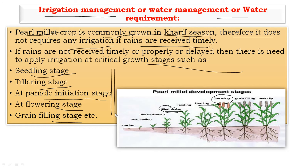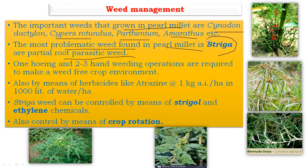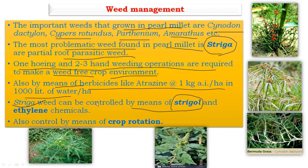Next, weed management. The most important weeds in pearl millet are Cynodon dactylon, Cyperus rotundus, Parthenium, Amaranthus, etc. The most problematic weed is the partial root parasitic weed called Striga. Striga can be controlled by crop rotation and spraying with strigol or ethylene. Along with one hoeing and two to three hand weeding operations are required to maintain a weed-free crop environment. If hand weeding is not possible due to heavy rains, spray herbicides like atrazine at the rate of 1 kg active ingredient per hectare in 1000 liters of water per hectare. Striga weed can also be controlled by strigol or ethylene chemical and crop rotation.